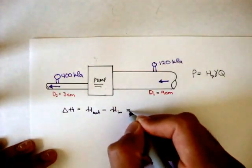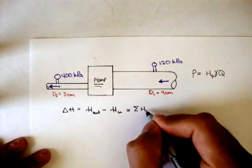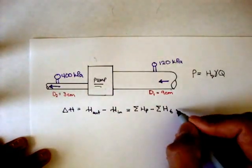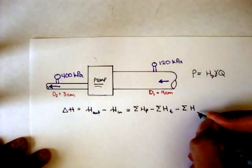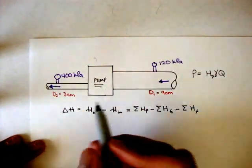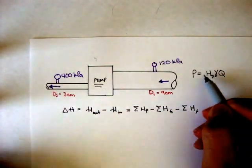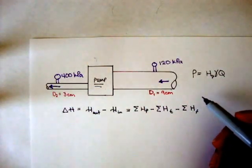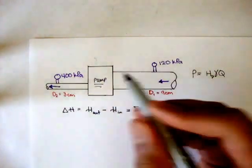And that's equal to the summation of the pump heads, minus the summation of all the turbine heads, minus the summation of all the frictional head losses. And that's the equation we found in the last video. And we can use these two equations to find what we're looking for in this problem. In this case, they want to know what the power is delivered by the pump.